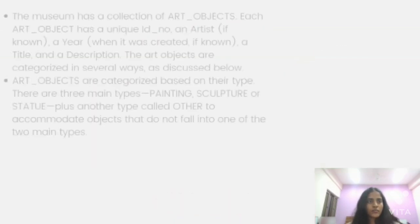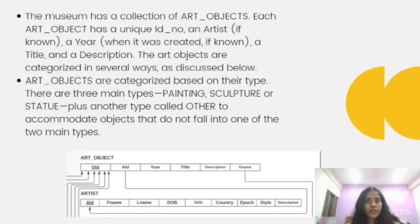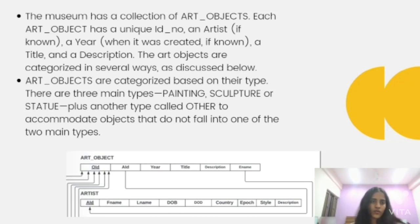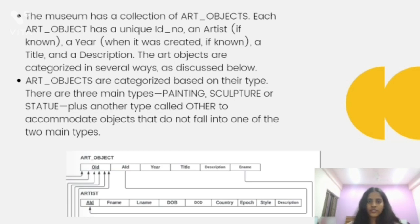We'll start by explaining the question first. The museum has a collection of art objects. Each art object has a unique ID, an artist, a year, a title and a description. The art objects are categorized in several ways. Art objects are categorized basically in three main types: painting, sculpture or statue, plus another type called 'other' to accommodate objects that do not fall into the main two categories.